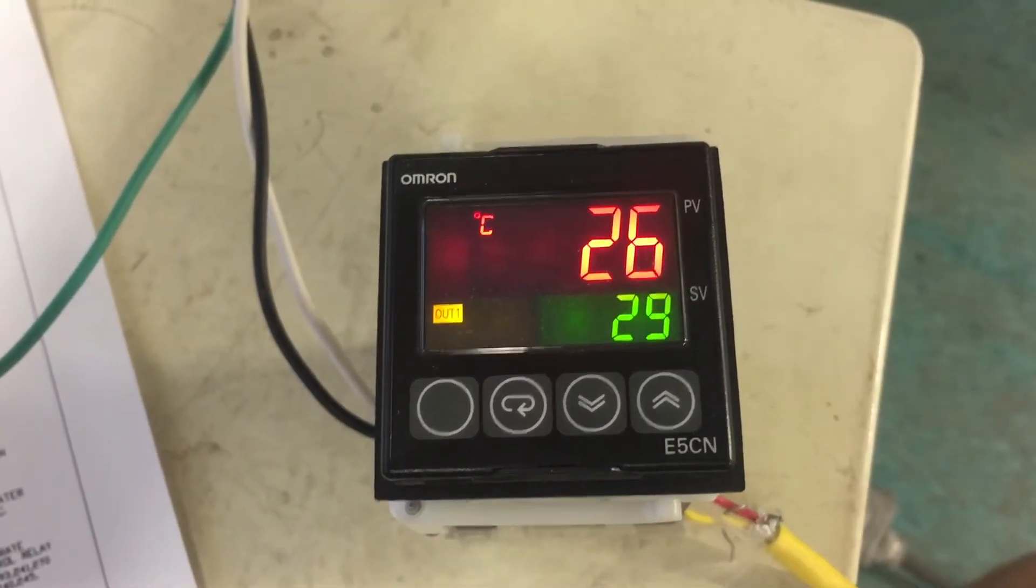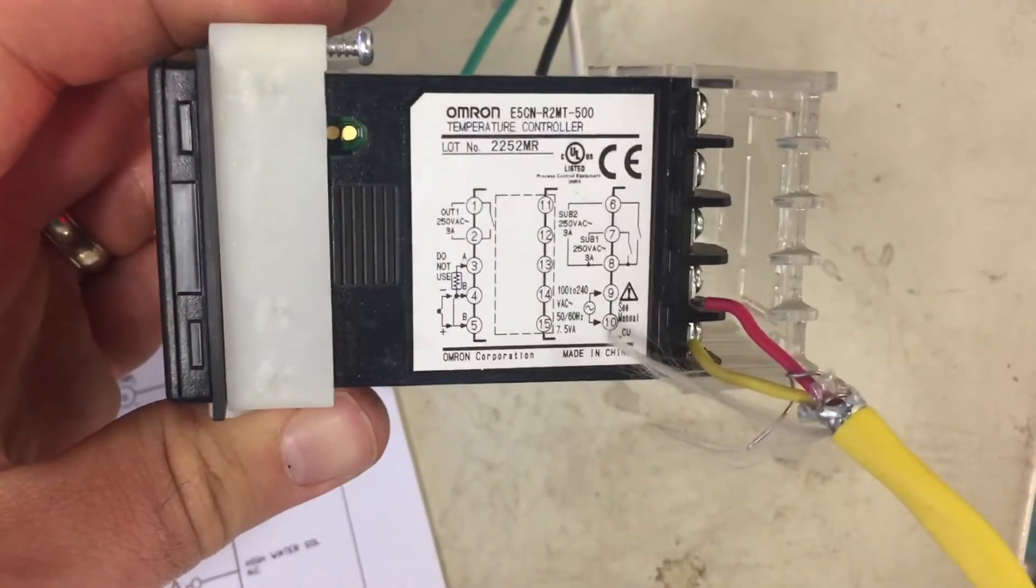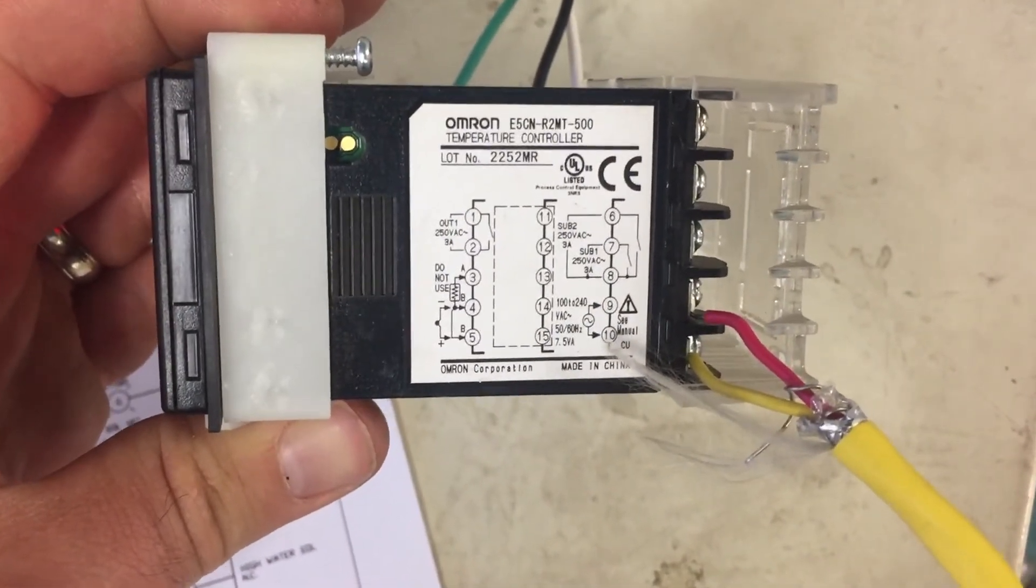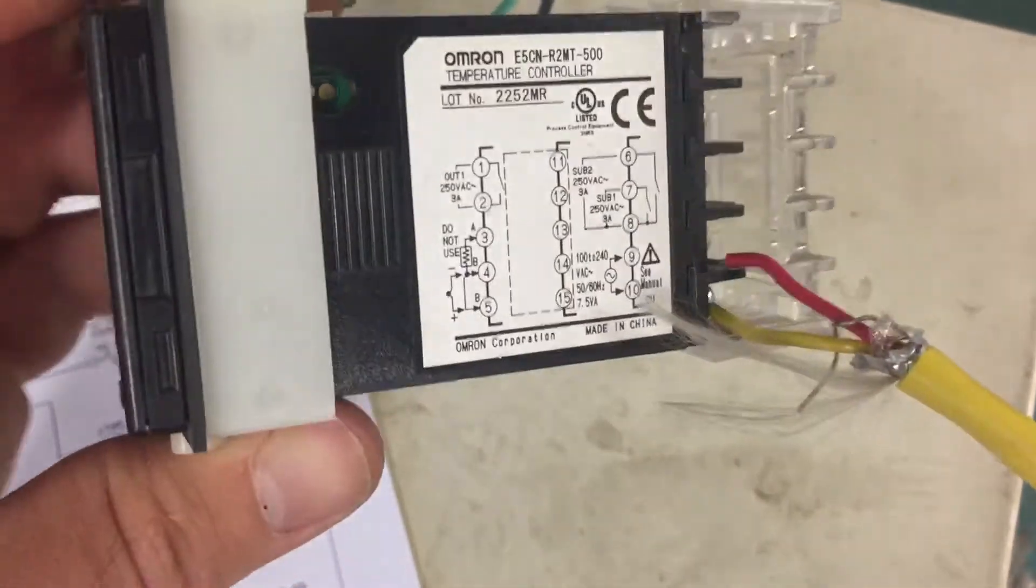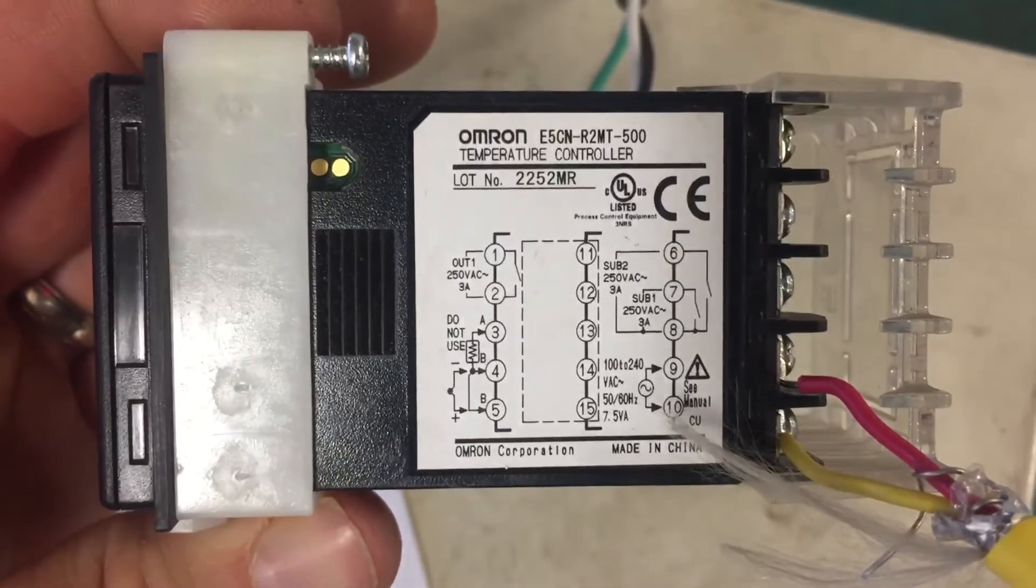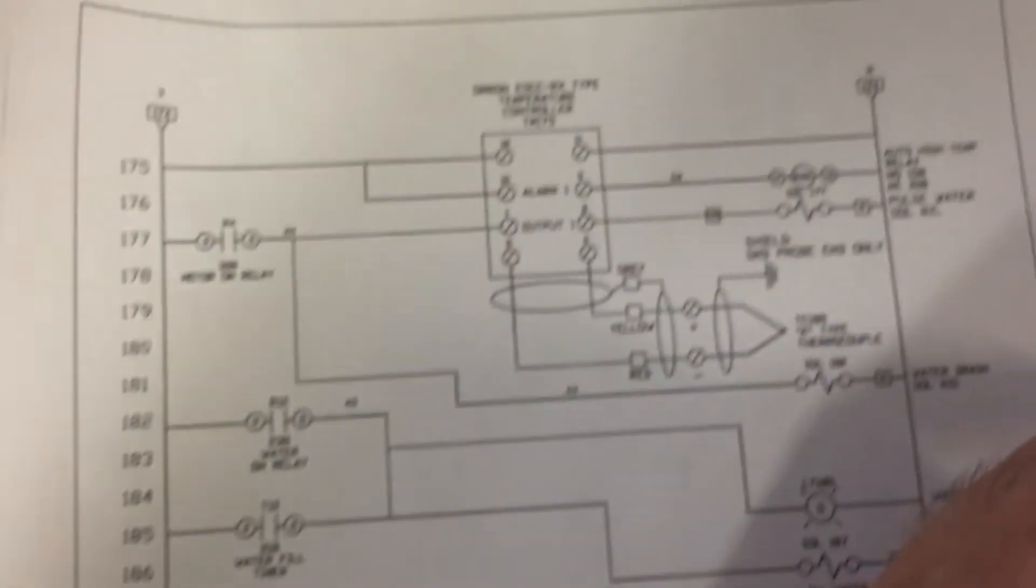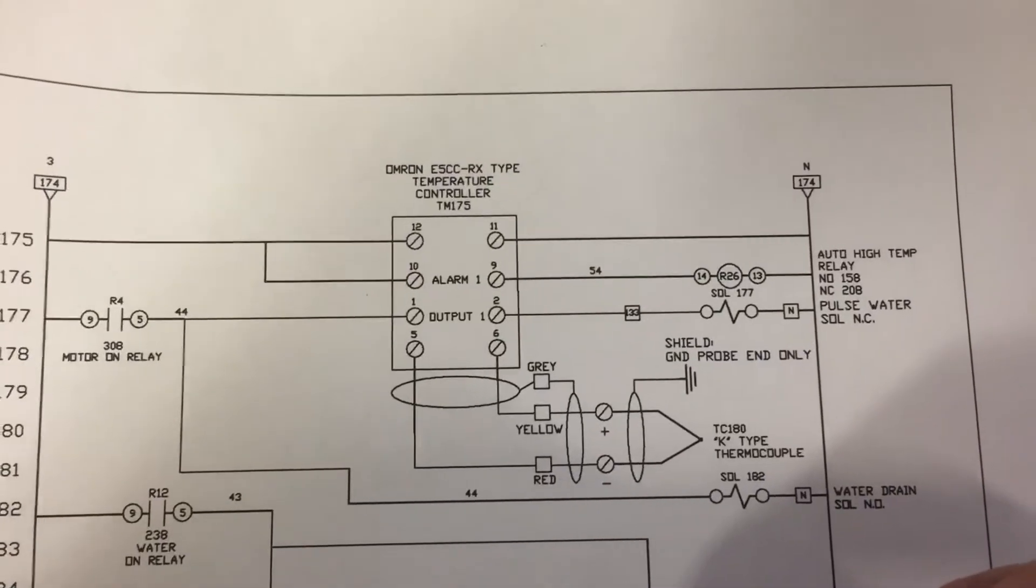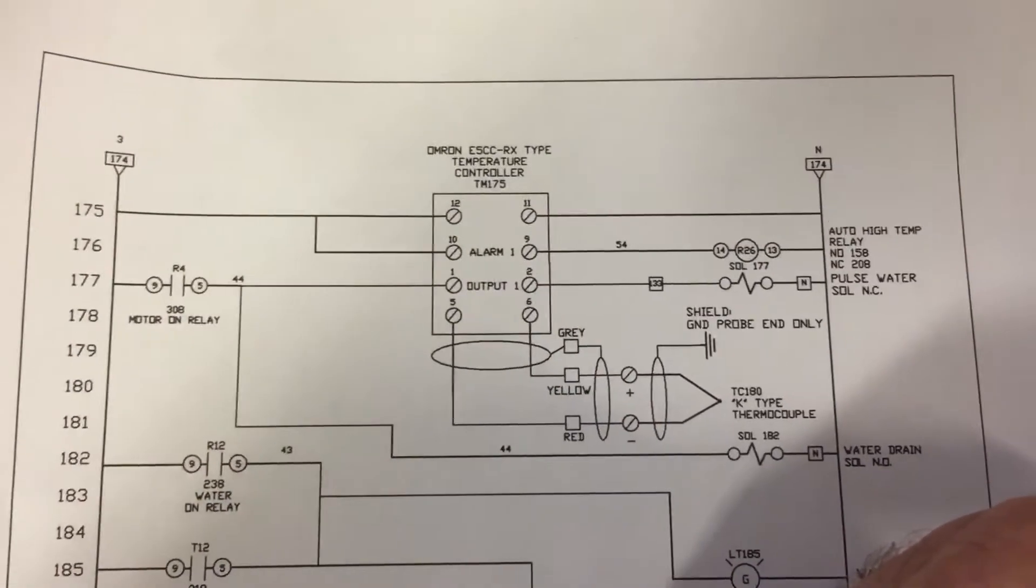Alright, so here we have an Omron E5CN, commonly used as the R2MT-500 on the steam engineering steam generators. You can see the wiring configuration. What we commonly use on these is terminal 1 and 2, which on our electrical is the activator output for a water solenoid or a relay activating the same pulse water solenoid.